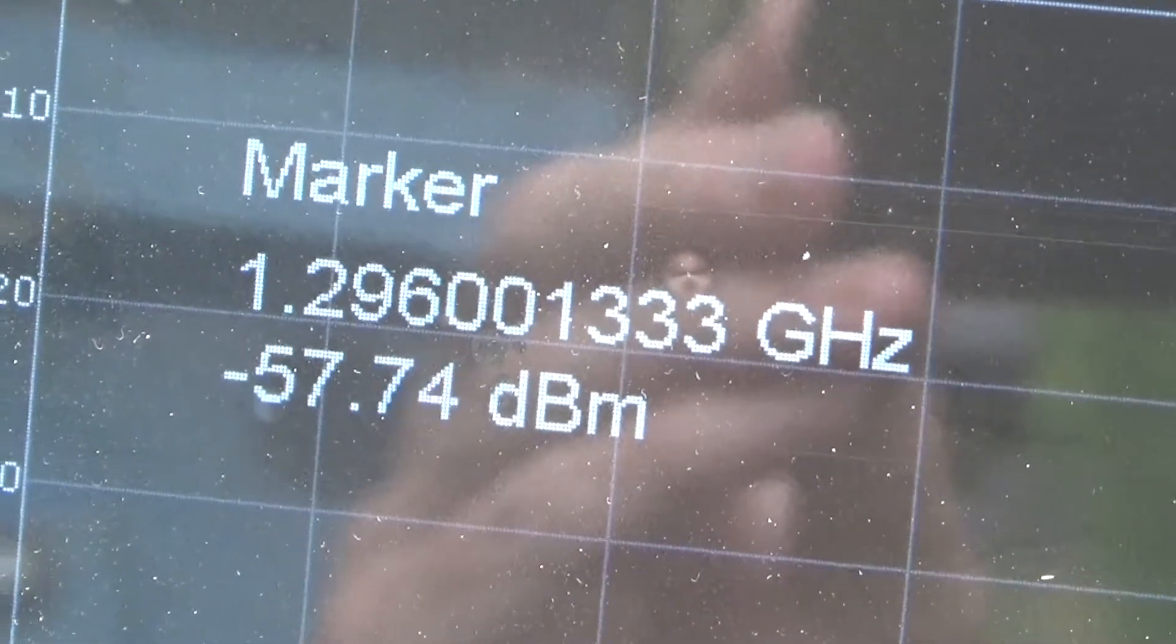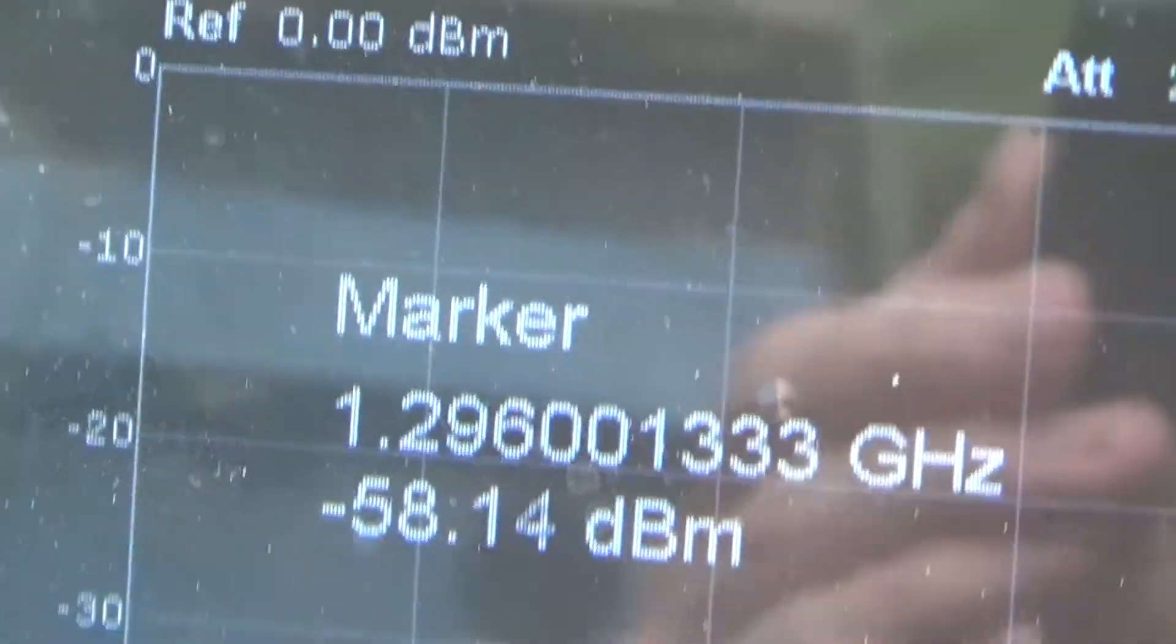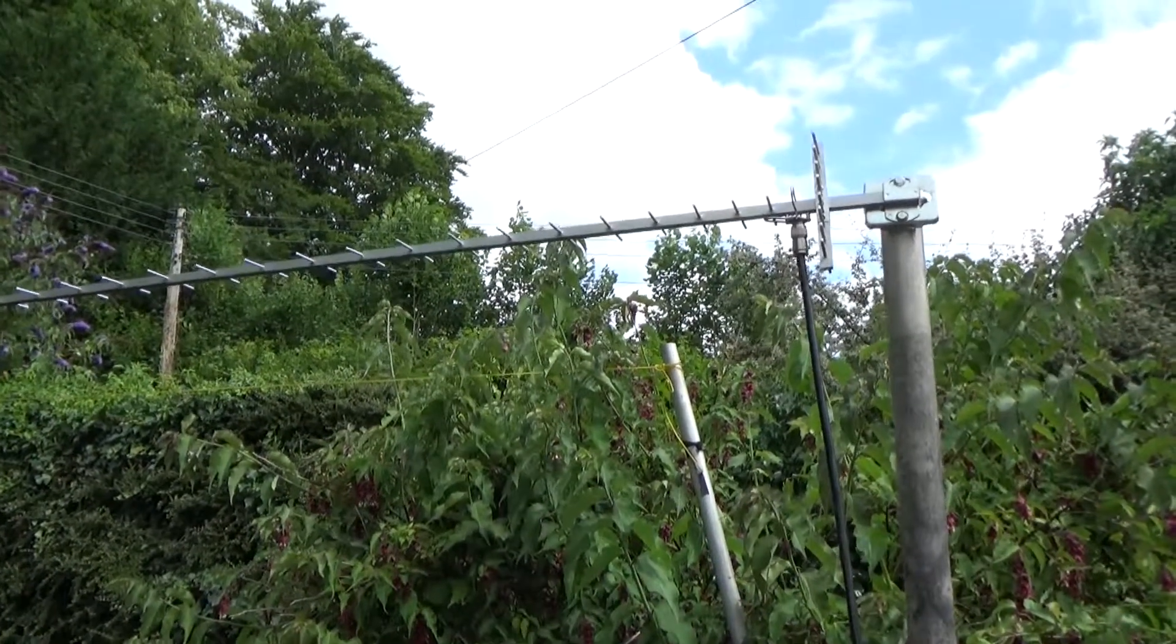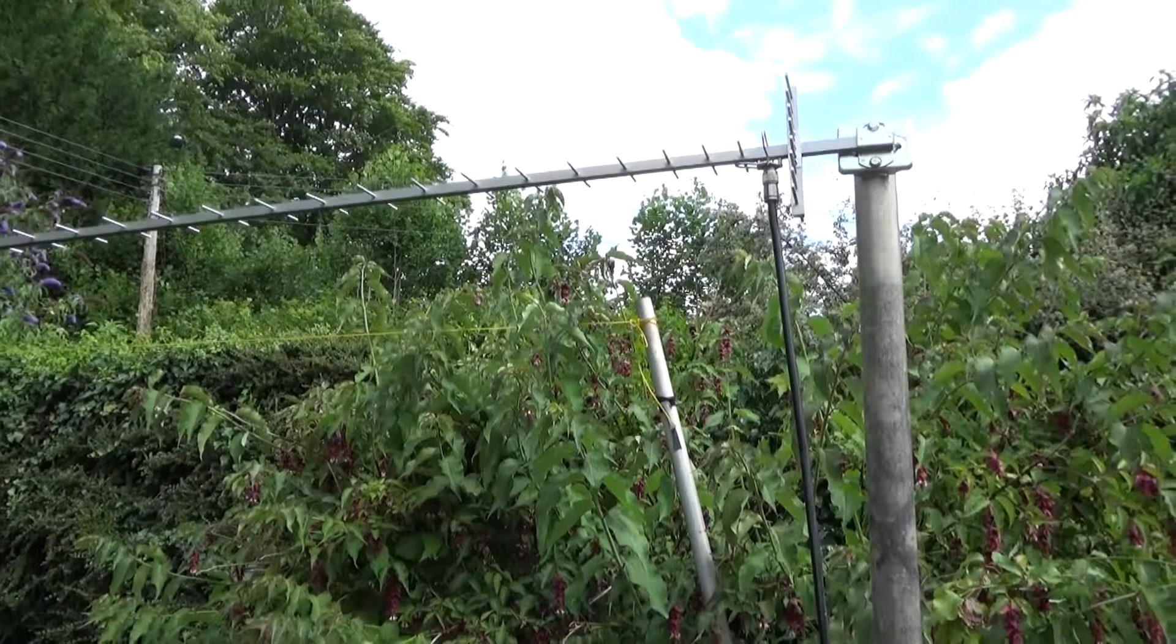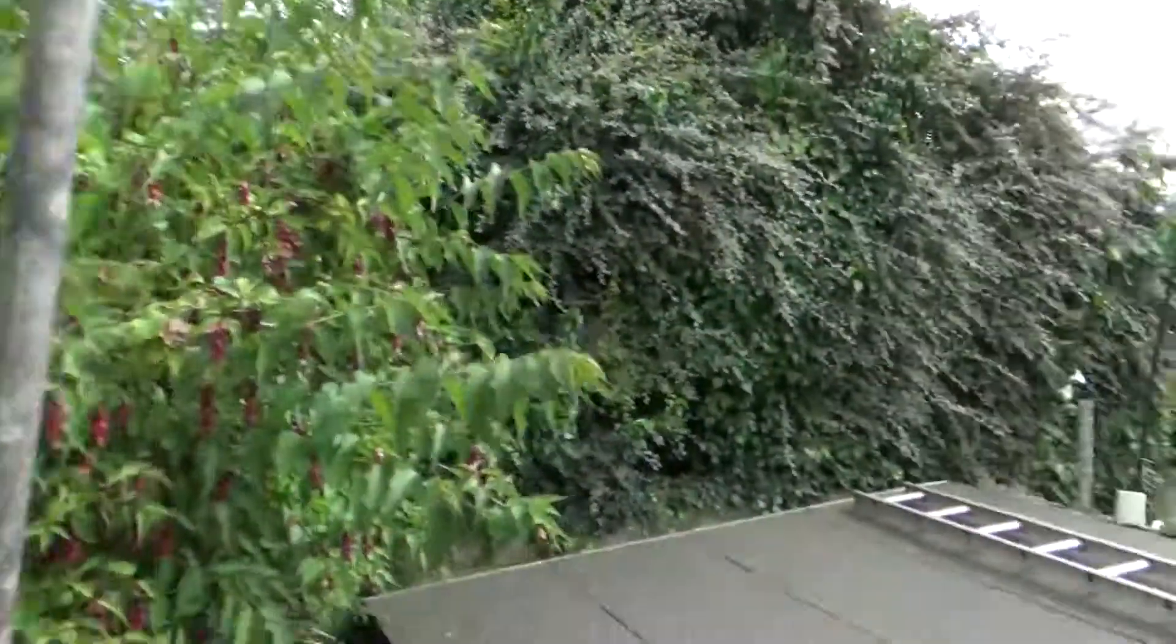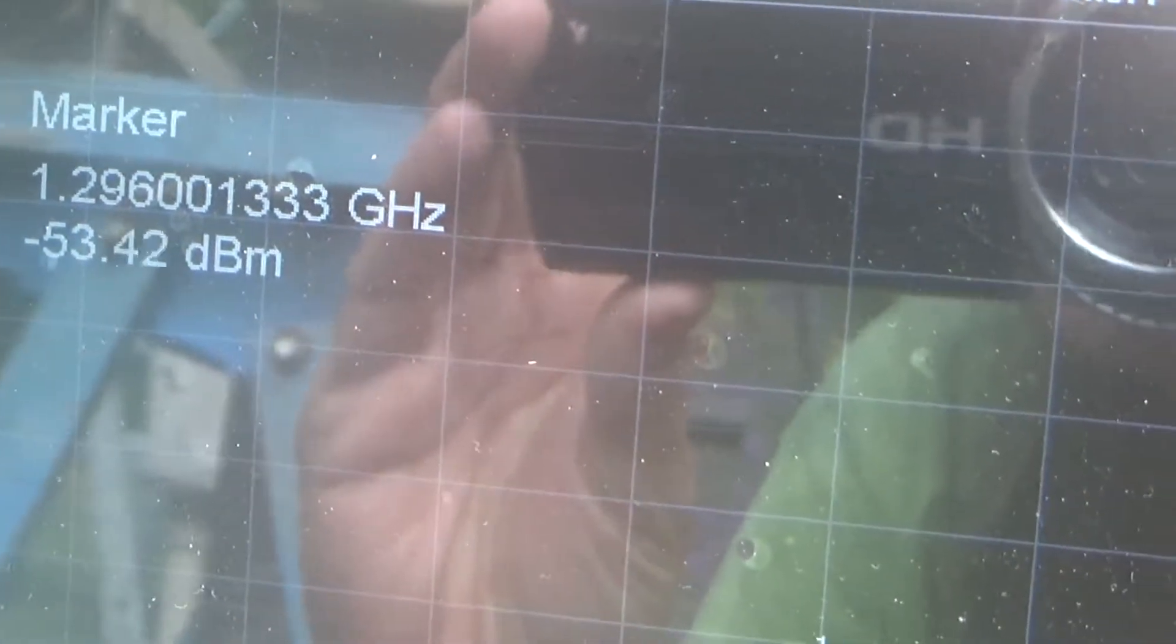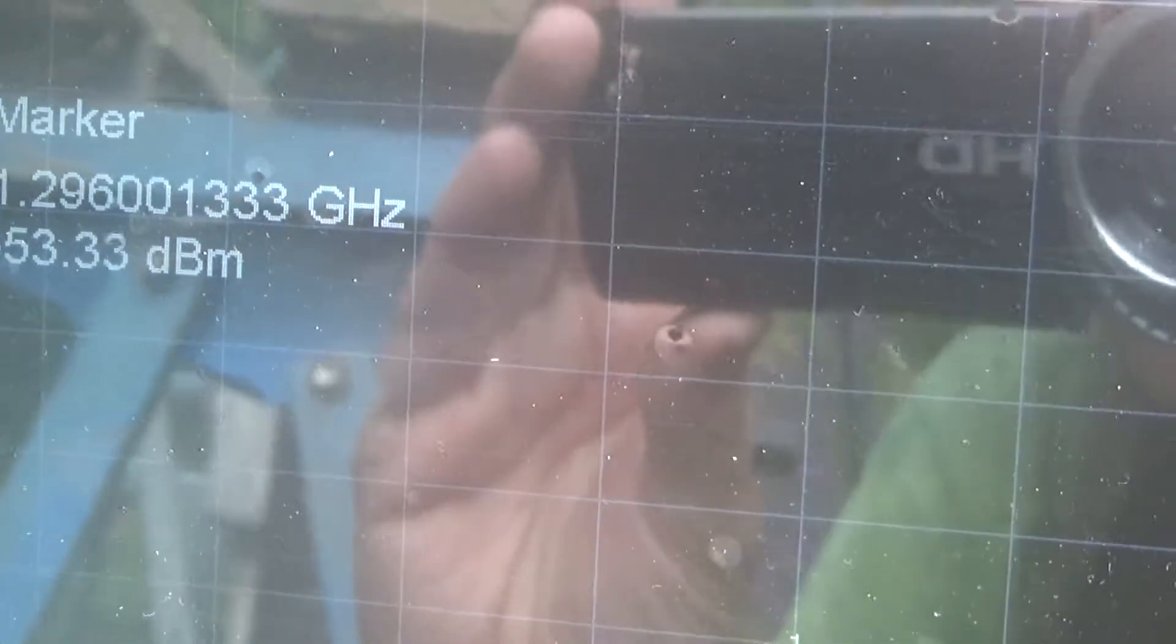Right, here we are, got the Yagi out and I have aligned it for maximum signal. It's much more critical because it's got such a narrow beam width compared to the quad, but also the elevation I've got to get exactly right as well. Let's go look at the spectrum analyzer. There's the peak and what am I reading? Minus 53 roughly. Call that minus 53, it's pretty steady actually compared to the other antenna. So that's an increase of roughly 4 dB, maybe five if you're lucky.